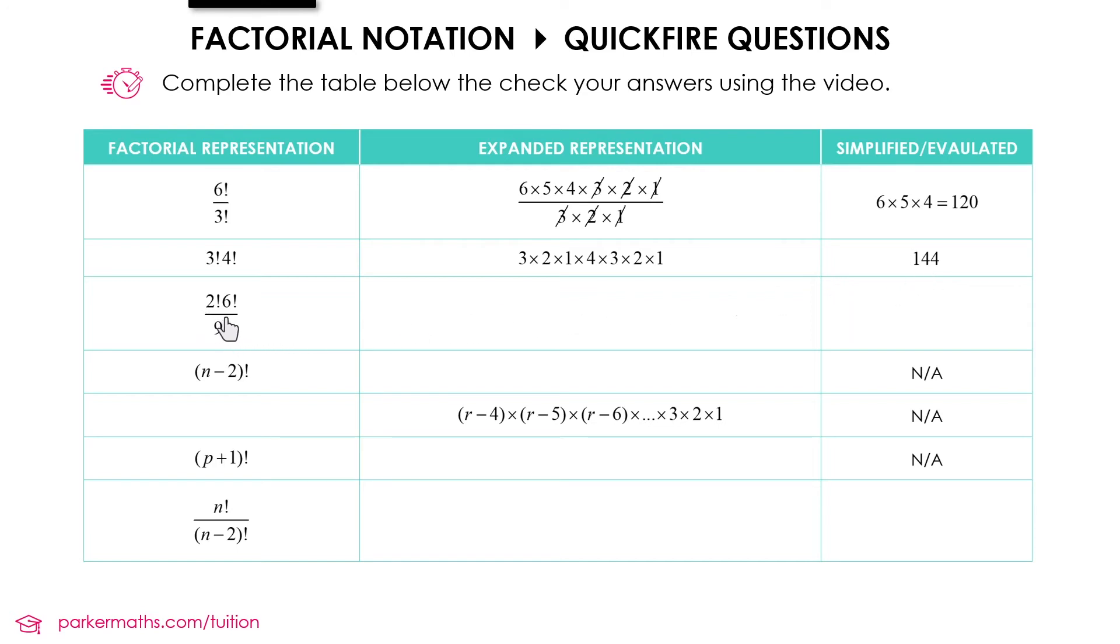For the next one 2 factorial times 6 factorial over 9 factorial. In expanded form would look like this. Notice that on the top and the bottom we've got 6 times 5 times 4 times 3 times 2 times 1. We can cancel that out. Leaving us with 2 over 9 times 8 times 7, which gives us 1 over 252 if you simplify.